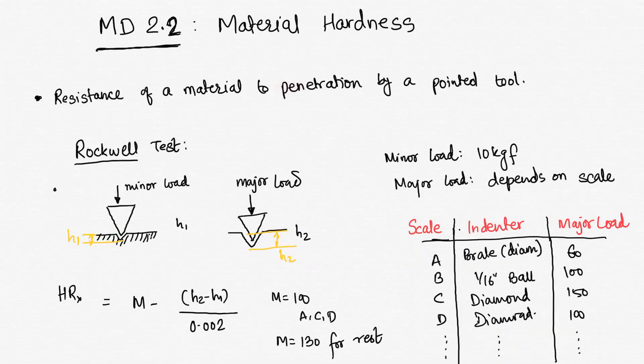So what test do we do to calculate hardness and what is hardness basically? Hardness is resistance of a material to penetration by a pointed tool. If I press a pointed tool against any surface, what is the depth of that penetration?